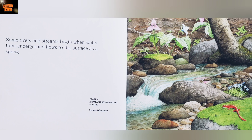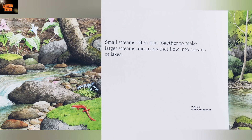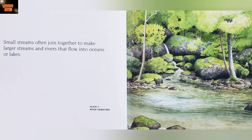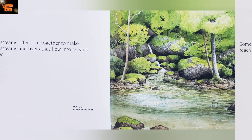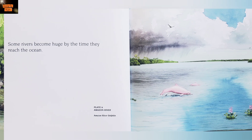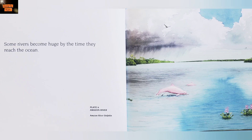Some rivers and streams begin when water from underground flows to the surface as a spring. Small streams often join together to make large streams and rivers that flow into oceans or lakes. Some rivers become huge by the time they reach the ocean.